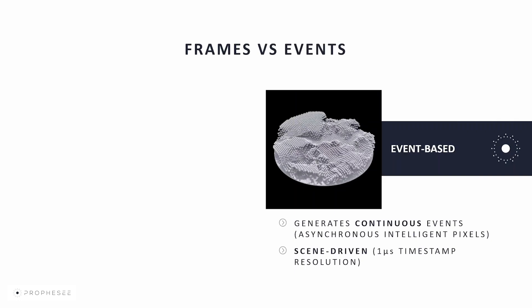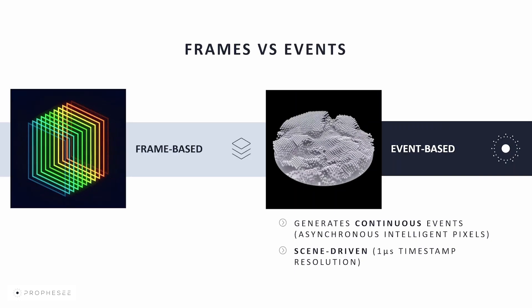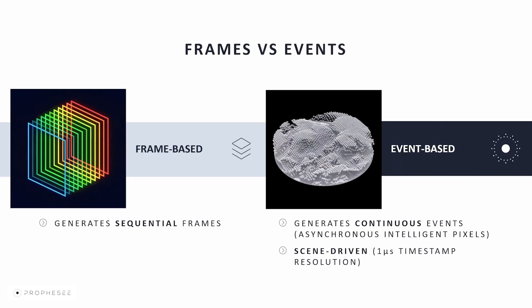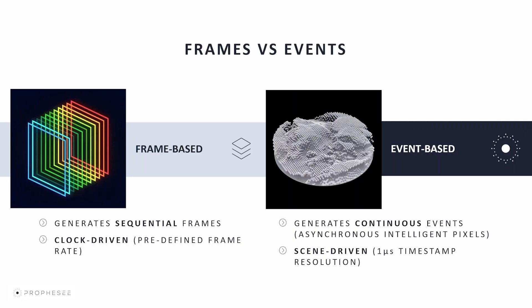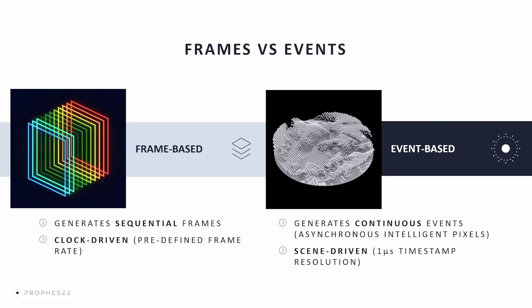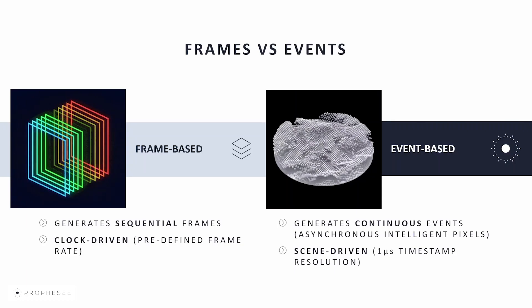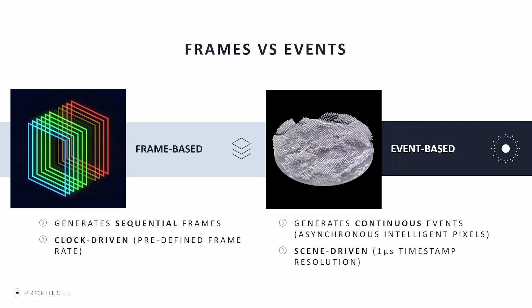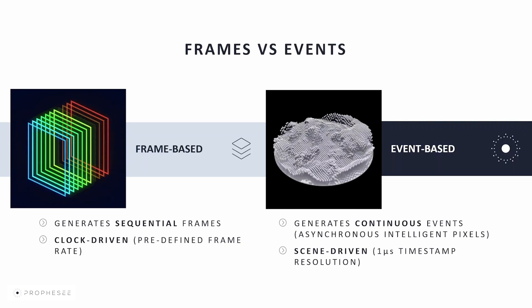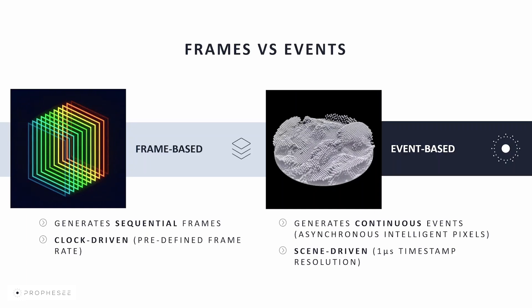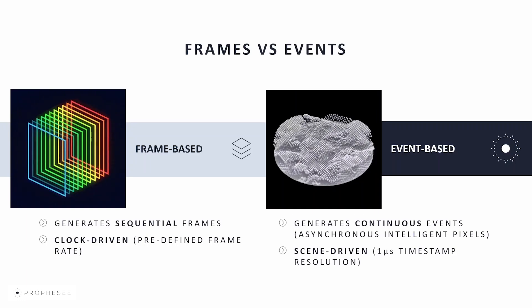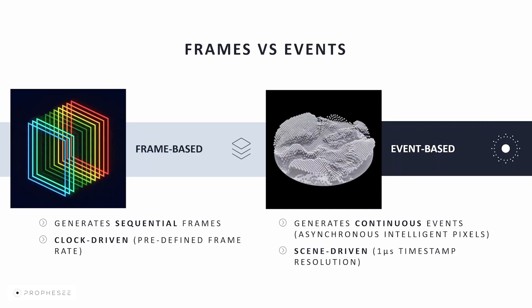Prophecy sensors don't acquire image-by-image data at a fixed rate as frame-based cameras do. On the contrary, event-based sensors are scene-driven — they generate sparse data called events as a reaction to the captured changes within the scene.